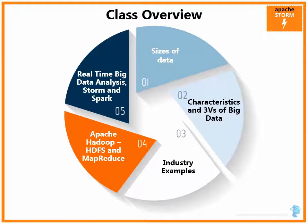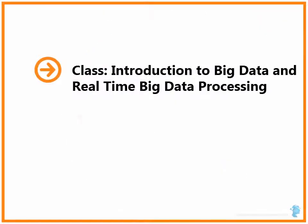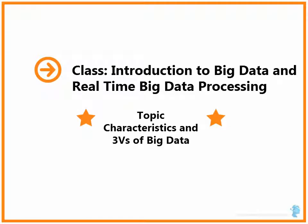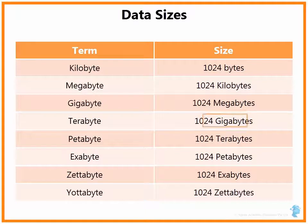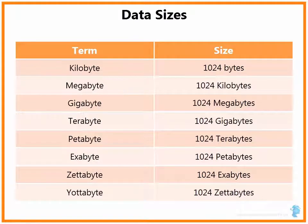Let us understand the concept of data sizes. This table shows the various terms used for data sizes. We all know kilobyte, megabyte and gigabyte. Terabytes are approximately 1000 gigabytes and petabytes are close to 1000 terabytes. New terms — exabytes, zettabytes and yottabytes — have been added to address Big Data sizes. When we say Big Data, we normally mean sizes in terms of terabytes or more.